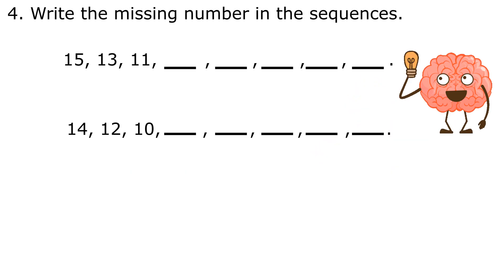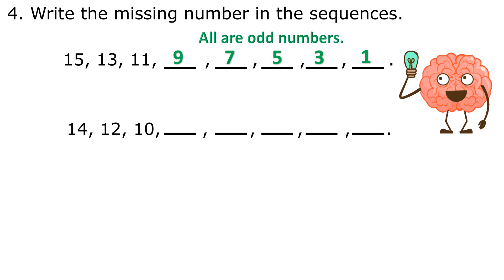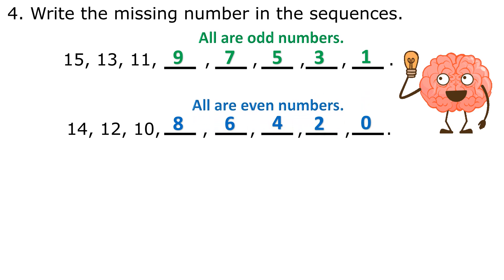Question 4. Write the missing number in the sequences. 15, 13, 11, 9, 7, 5, 3, 1 — all are odd numbers. 14, 12, 10, 8, 6, 4, 2, 0 — all are even numbers.